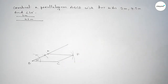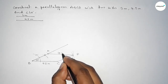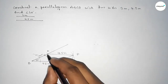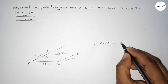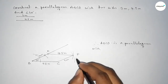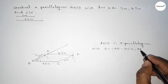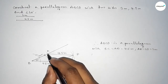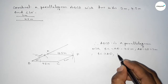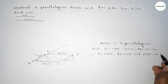First joining A and D, then joining C and D. This side is 4.5 centimeter and the opposite side is also 4.5 centimeter. This side is 3 centimeter and the opposite side is also 3 centimeter. Therefore ABCD is a parallelogram with given sides: BC equal to AD equal to 4.5 centimeter, AB equal to CD equal to 3 centimeter, AB parallel to CD, BC parallel to AD, and angle ABC equal to 30 degrees.